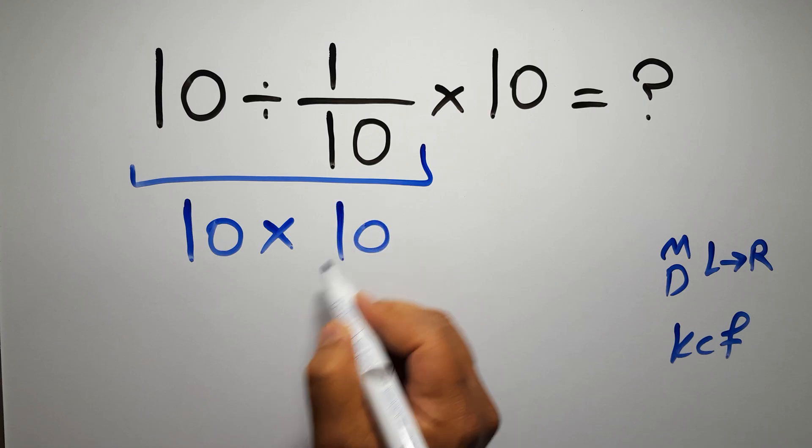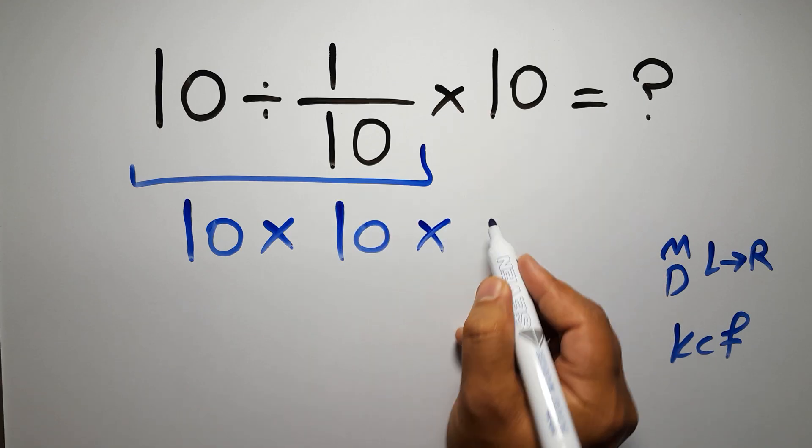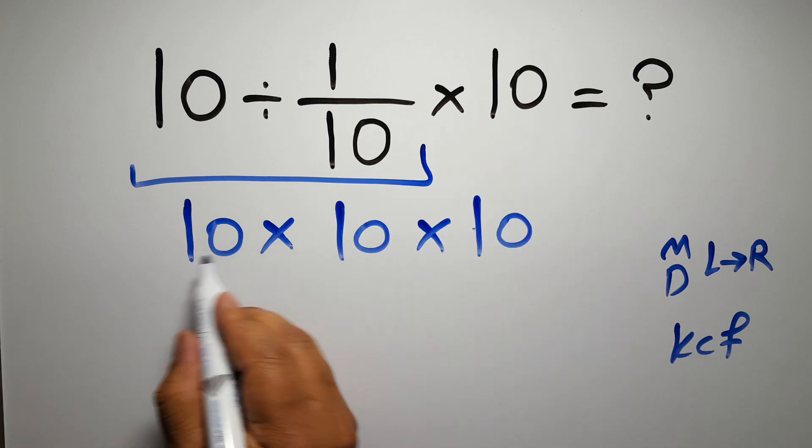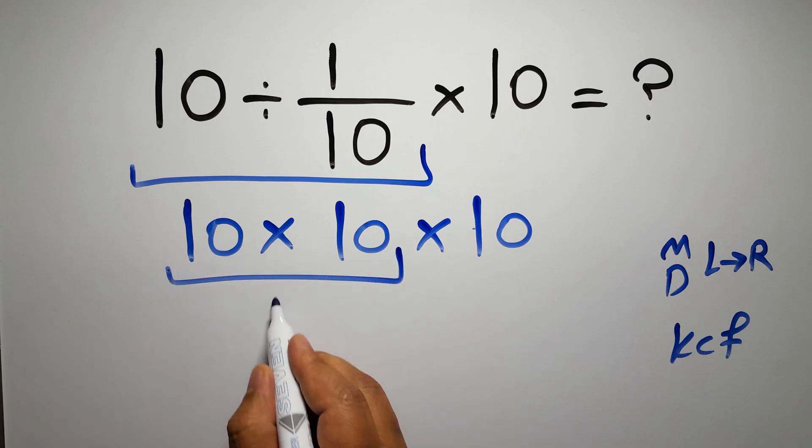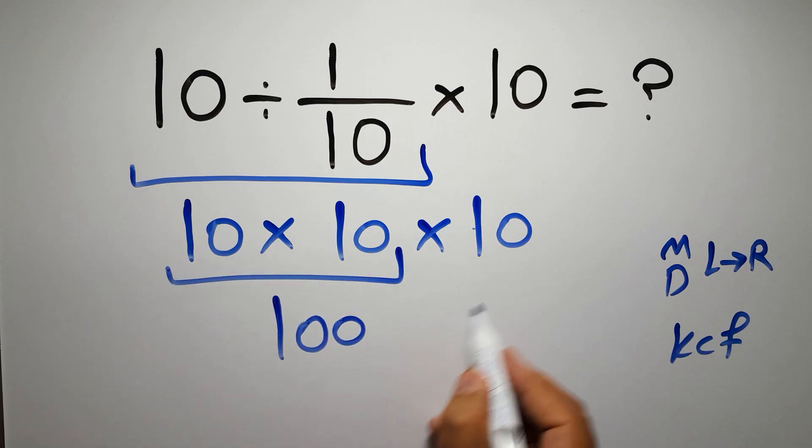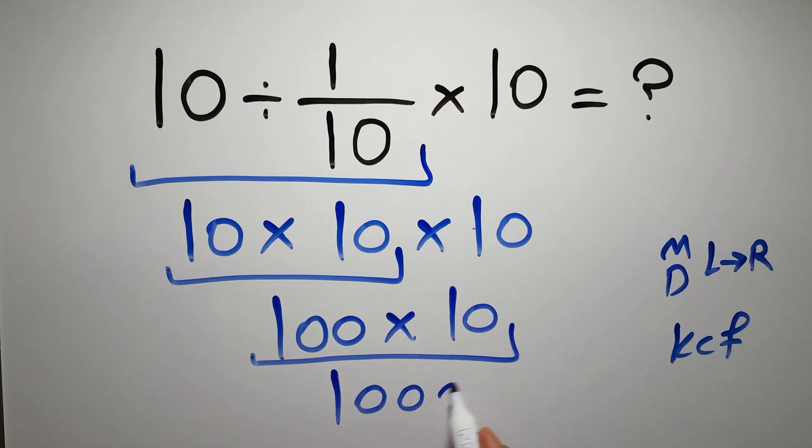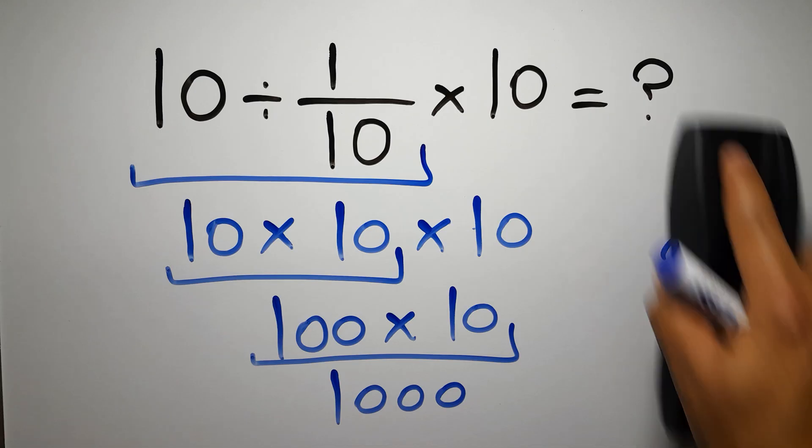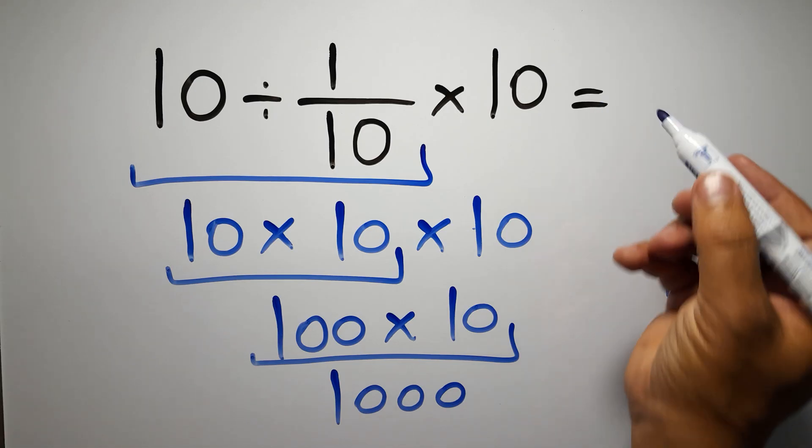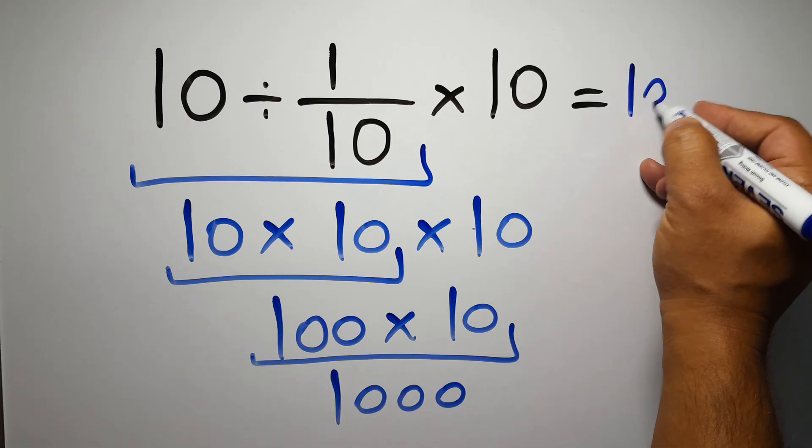And again here we have times 10. 10 times 10 gives us 100, and 100 times 10 equals 1000. And this is our final answer to this problem. The correct answer is 1000.